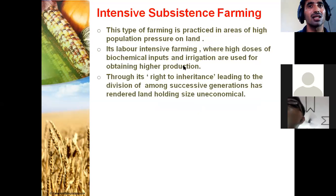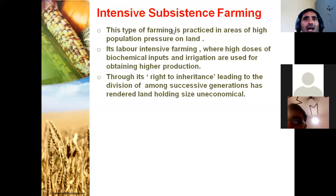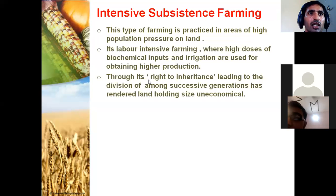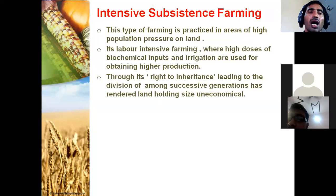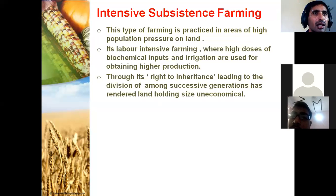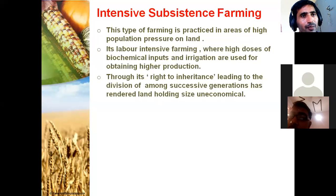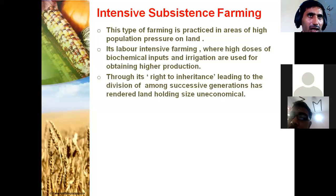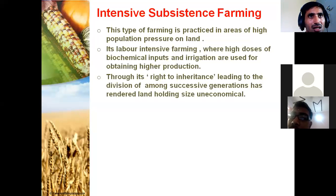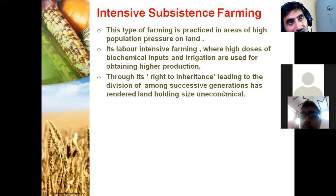This is why it is called primitive subsistence farming — it is only enough for the family. It is very common in the northeastern states like Assam, Meghalaya, Mizoram, and Nagaland. It is also known as Pamulu in Manipur, Deepa in Bastar district of Chhattisgarh, and Andaman in Nicobar Islands. Shifting cultivation or Jhuming cultivation is known by different names in different parts of the country and world.